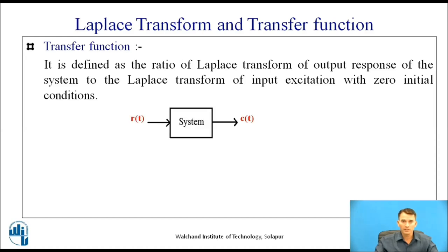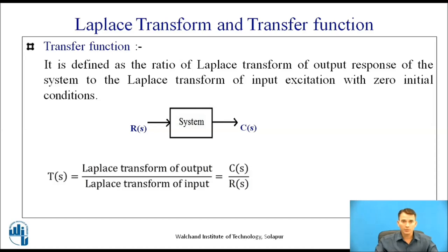Consider a system with input in the time domain as R(t) and output response C(t). To find the Laplace transform, the input is denoted as capital R(s) and the output as capital C(s). So the transfer function T(s) is given as: T(s) = C(s) / R(s), that is, the Laplace transform of output divided by the Laplace transform of input.